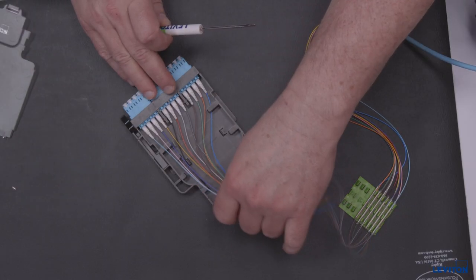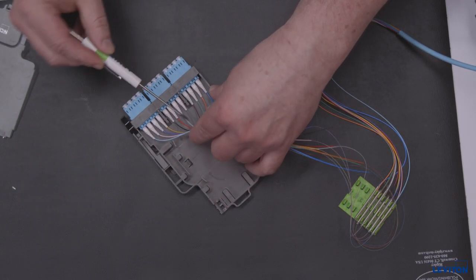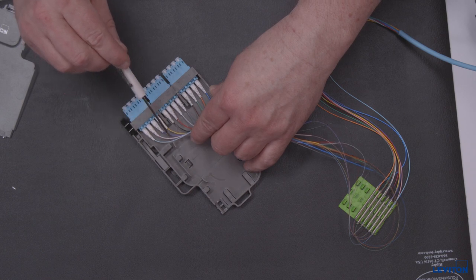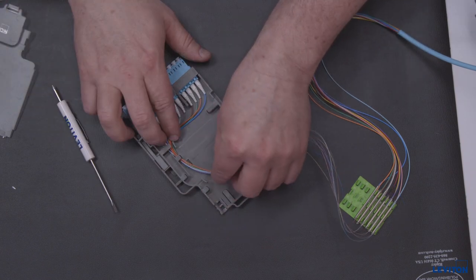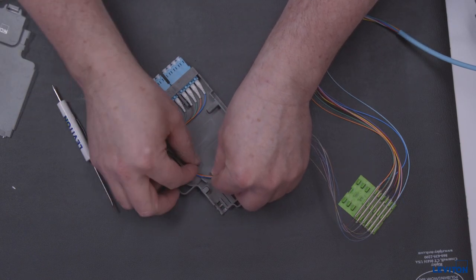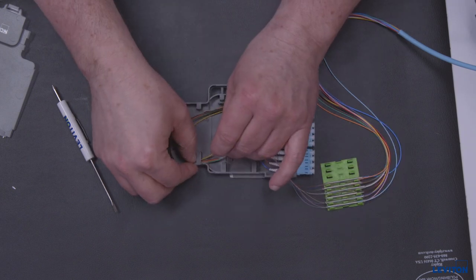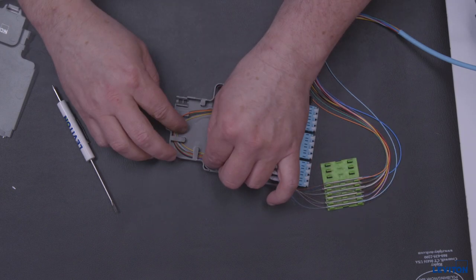Now we will begin loading the terminated assembly into the module base. Begin by feeding the fibers from the connectors into the pigtail channel. Rotate the module base clockwise while placing the grouped fibers under the cable management tabs.